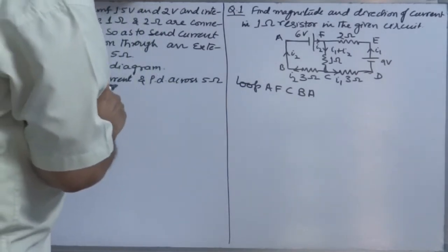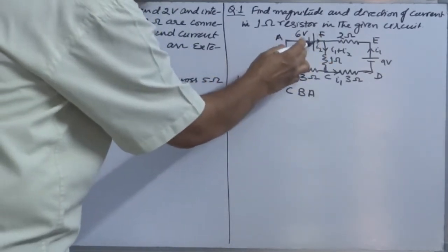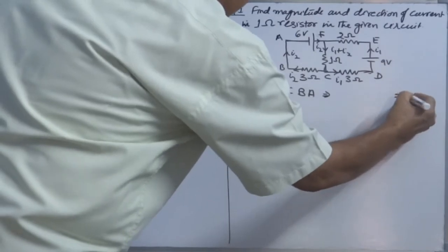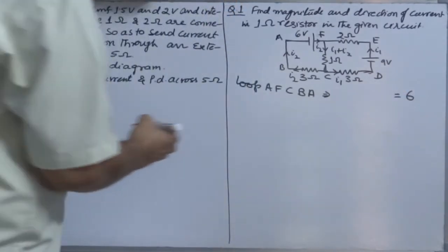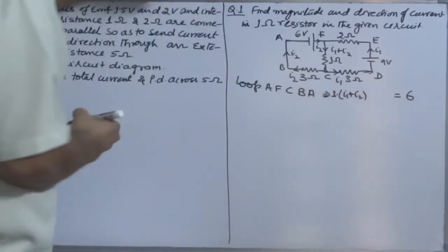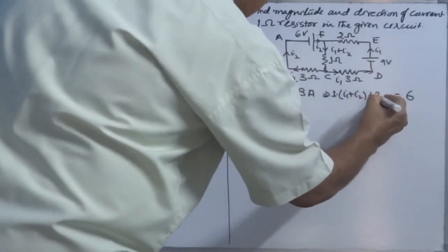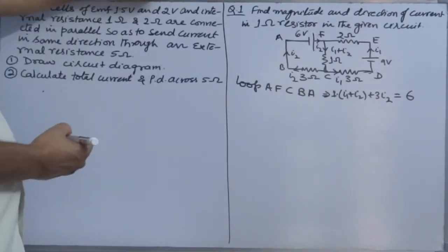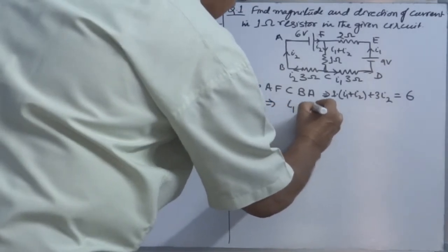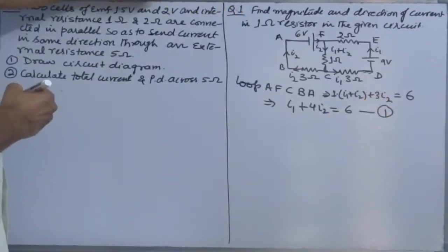Follow the sign convention. When moving from A to F, we interact with the negative terminal of the cell first, so we take this as positive 6 on the right-hand side. The 1 ohm direction of current is the same, so we write 1 into (I1 + I2). Coming back C to B, direction of current is again the same, so we write 3I2. This equals 6.